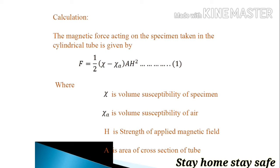Where χ is the volume susceptibility or magnetic susceptibility of the specimen, χ_A is the volume susceptibility of the air, H is the strength of applied magnetic field, and capital A is the area of cross section of the tube.